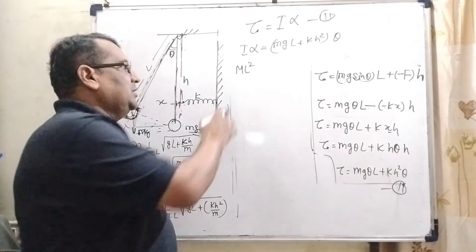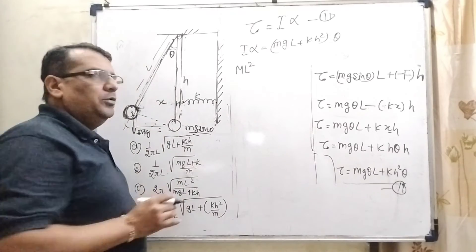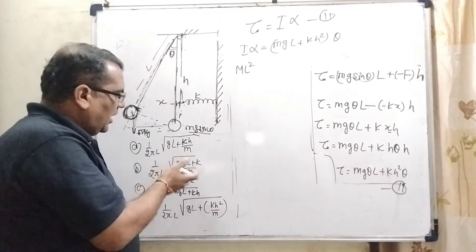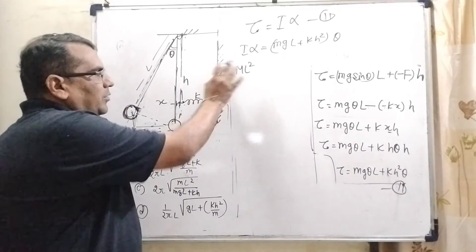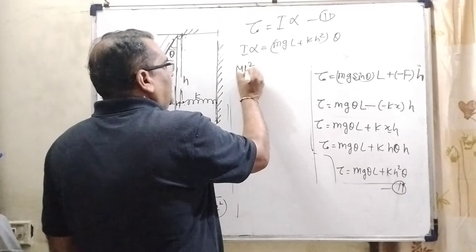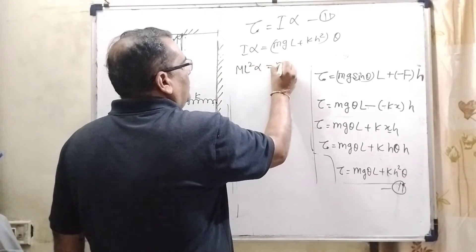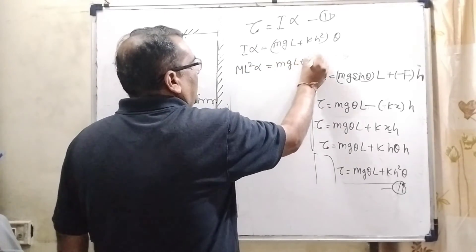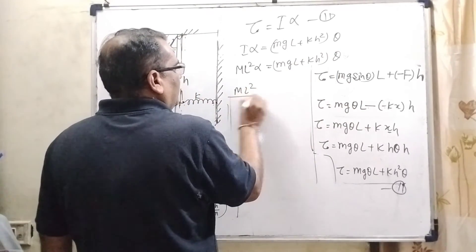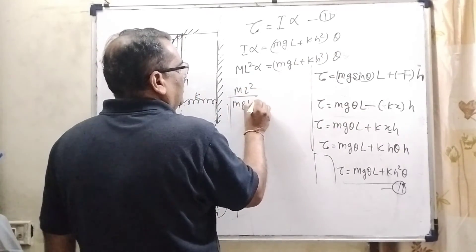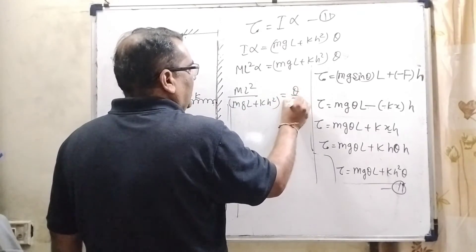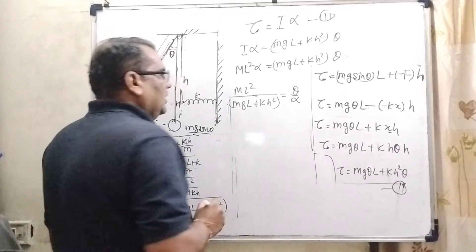Here, I can be written as ML square. General formula for moment of inertia ML square. Because if we have to put 2 by 5 Mr square moment of inertia of the bar, but here R is not given. So, therefore, we have to put as it is ML square. So, ML square alpha equal to MGL minus KH square theta. So, ML square by MGL minus KH square is equal to theta by alpha.